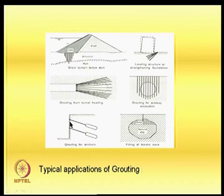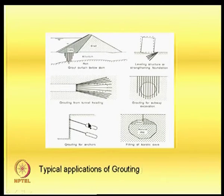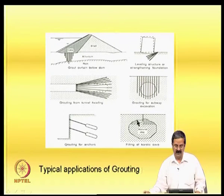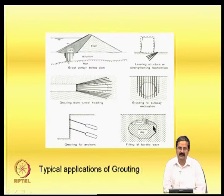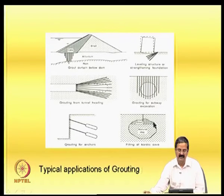In specialized applications, grouting is used for ground anchors — the anchored zone uses pressure bulbs to increase passive resistance; these are called grouted anchors. Grouting is also used for filling karstic cavities, which can form due to geological anomalies like dissolution of material underground. These cavities must be filled, and grouting is a suitable alternative.